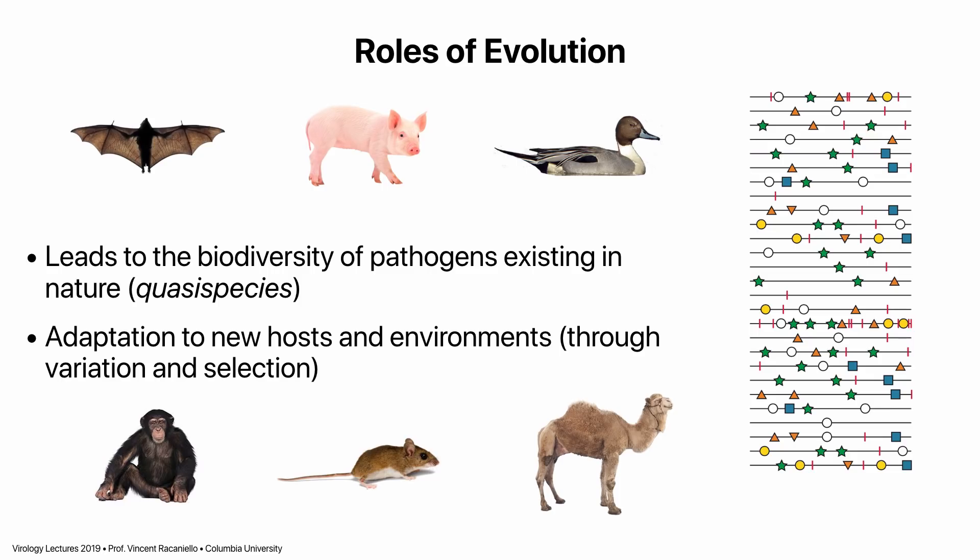Without a quasi-species, this adaptation couldn't happen. Viruses in one species, like a bat, harbor many different variants. When we or other animals encounter them, the quasi-species is passed on, and maybe one genome that's particularly adapted to replicating in us will predominate.